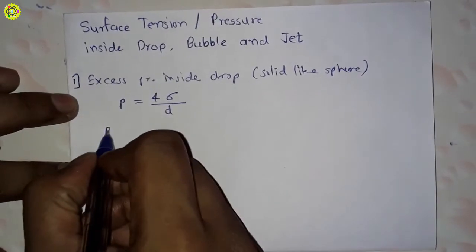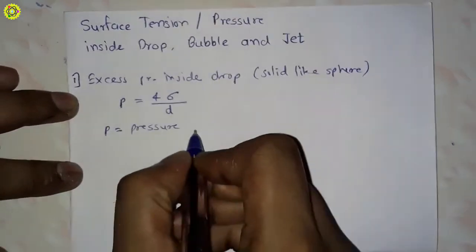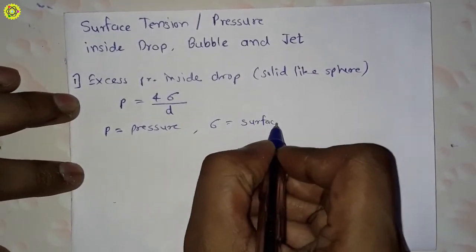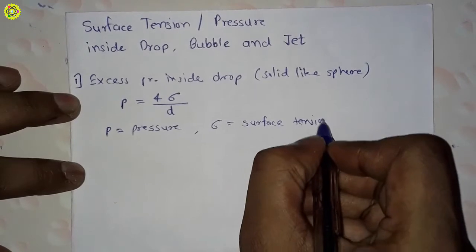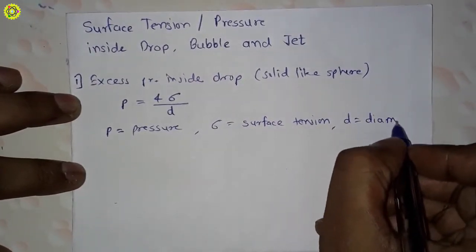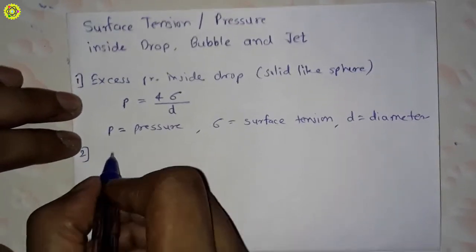Here, P is pressure, σ (sigma) is surface tension, and d is diameter. Now next, the second case is excess pressure...